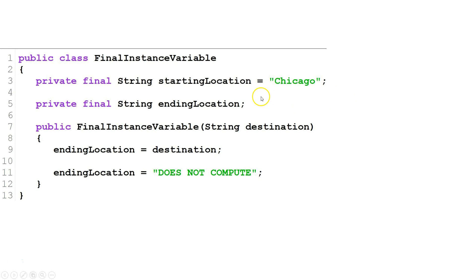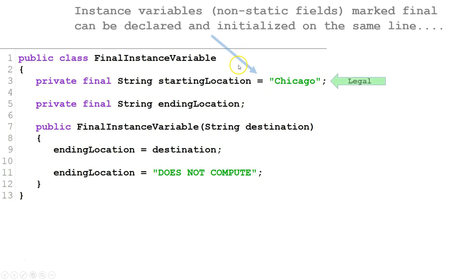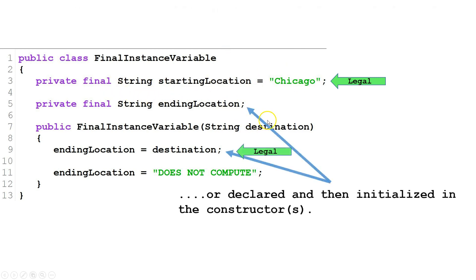Here we have an example of an instance variable, also known as a non-static field. We have two choices. We can either initialize the value on the same line that we declare it, or we can declare it on one line and then initialize it in the constructors.